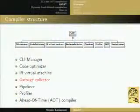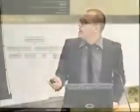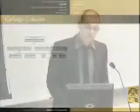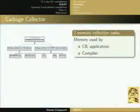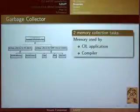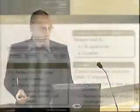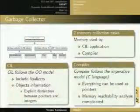Then we have garbage collection, which is an important task. What we found through experimental evaluation is that it is important to have two different interfaces for two different tasks: one to collect memory used by the CIL application, and one to collect memory used by the compiler itself. The usage patterns are different because the compiler is written in C, while CIL follows the object-oriented model including finalizers. We can distinguish between pointers and integers in CIL, whereas in C everything can be used as a pointer, making memory reachability analysis much more complicated.